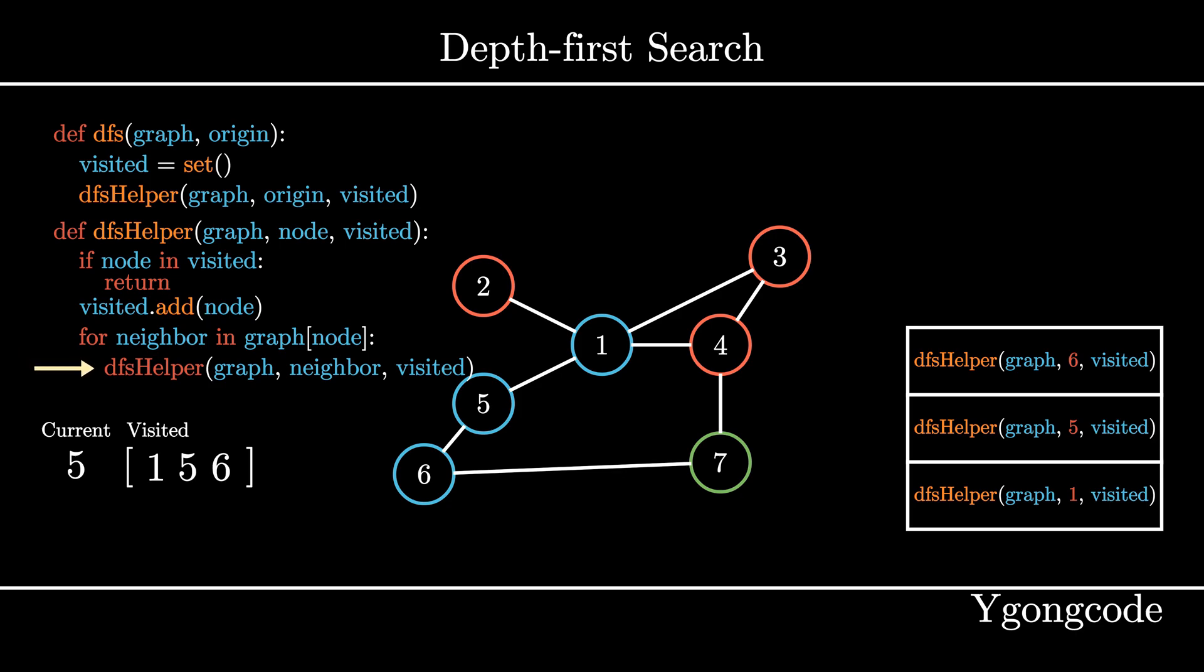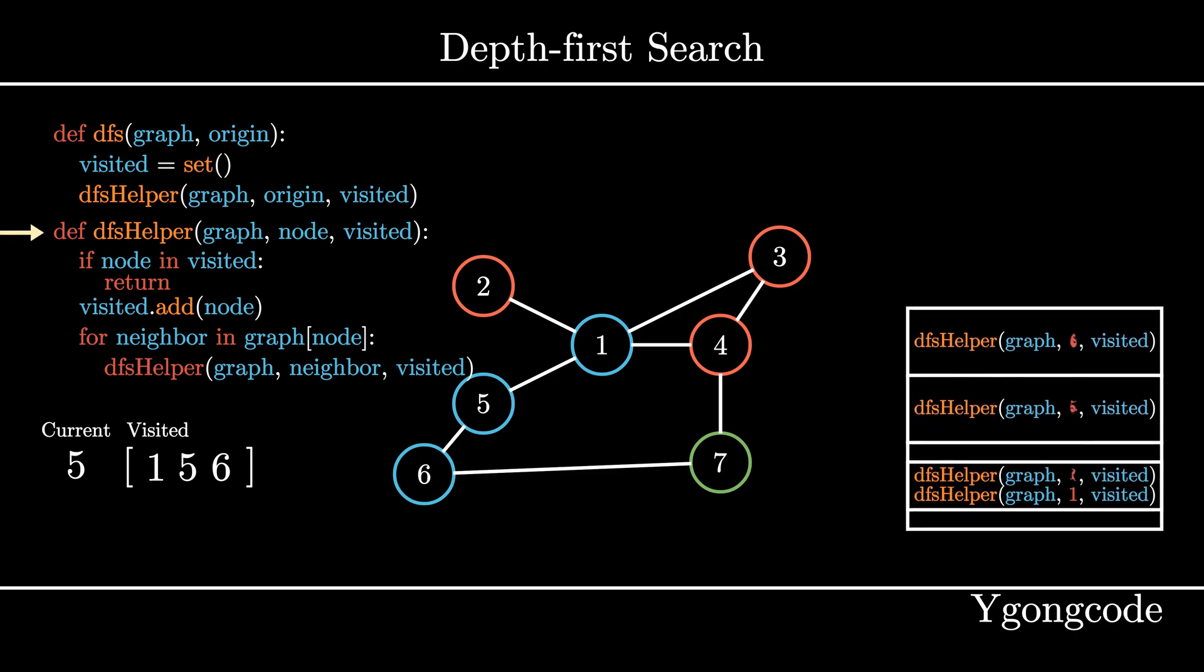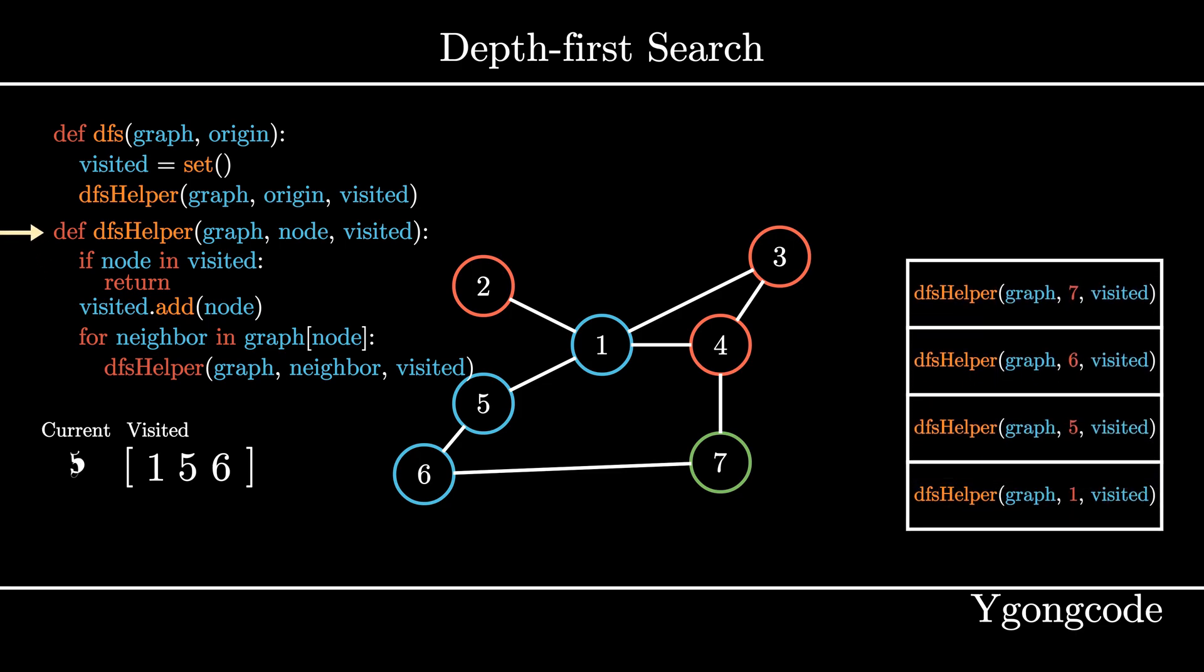Here, we pick another neighbor, node 7, and call dfsHelper on node 7 and add it to the call stack.